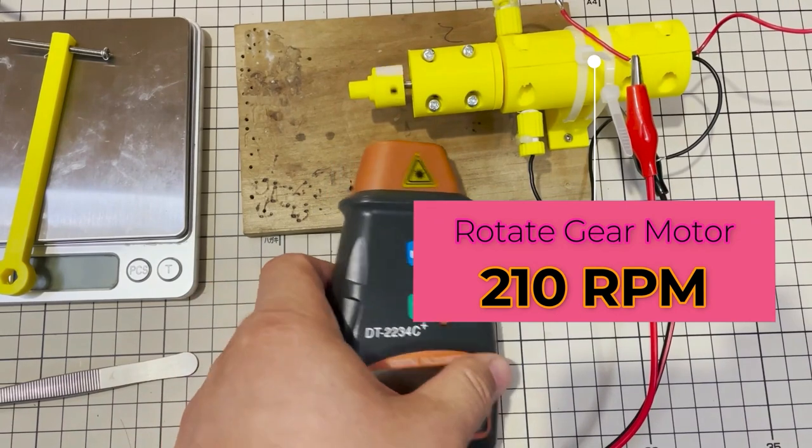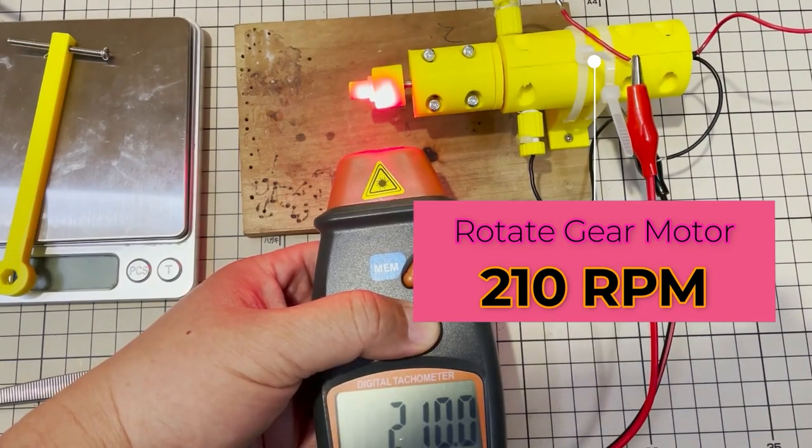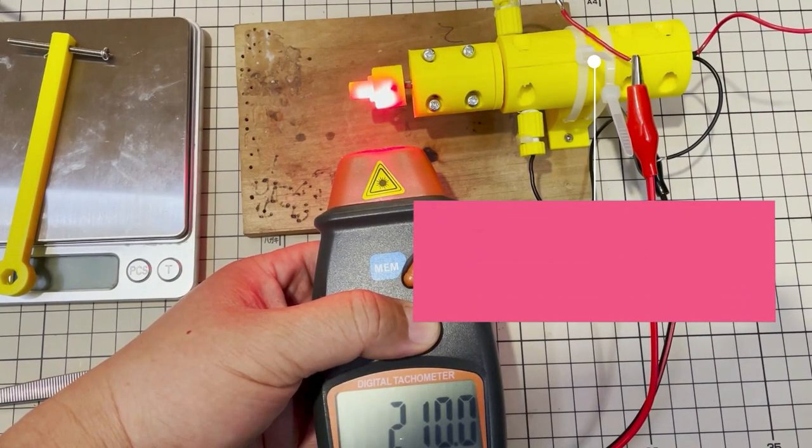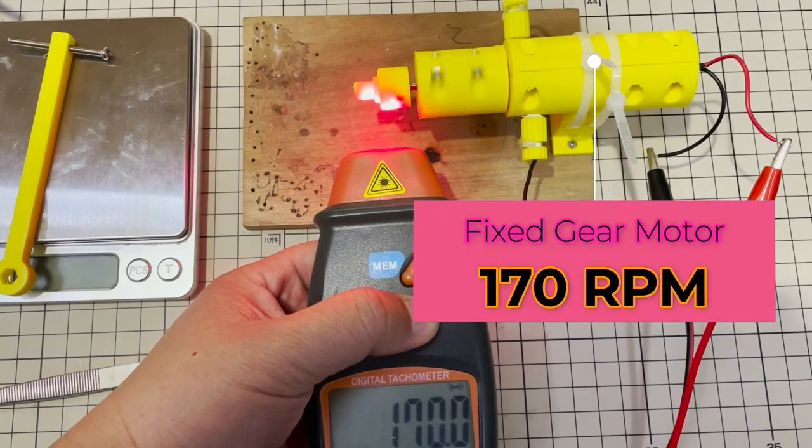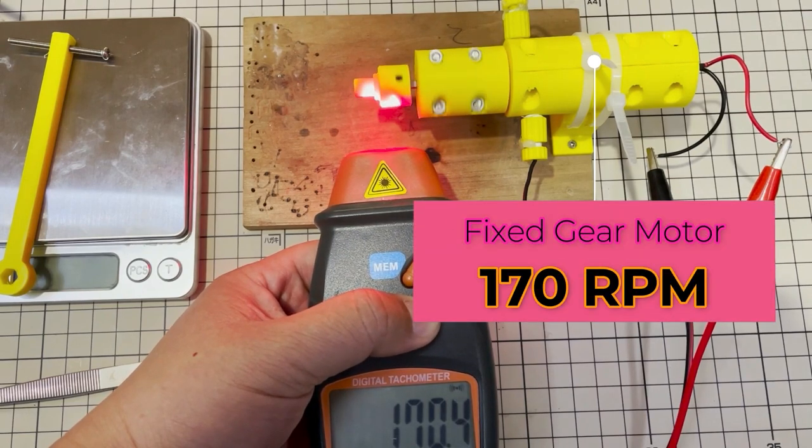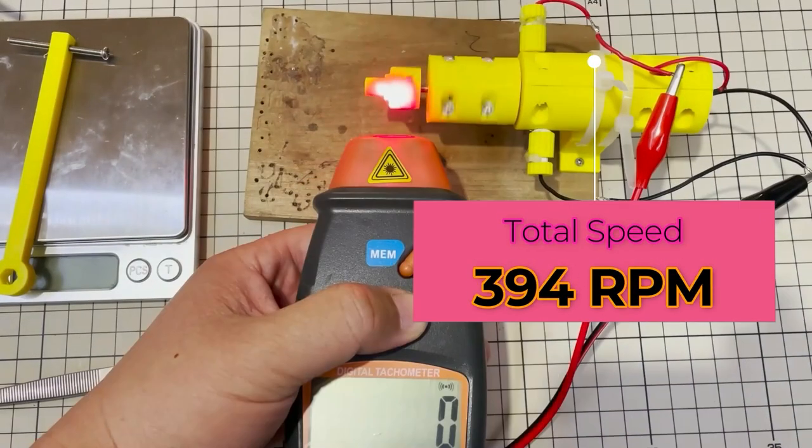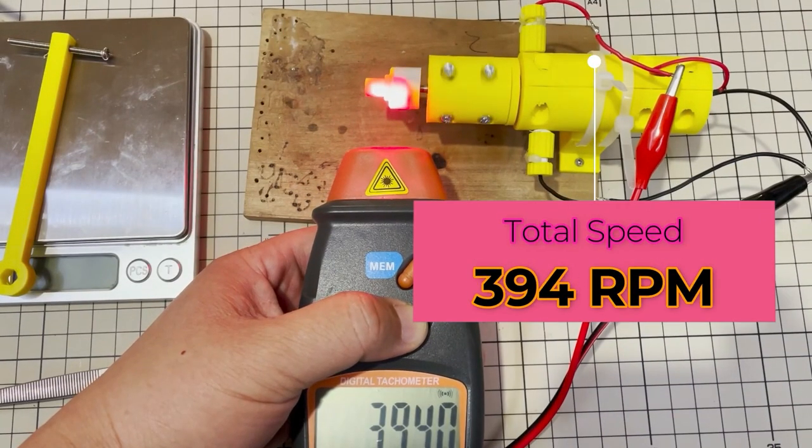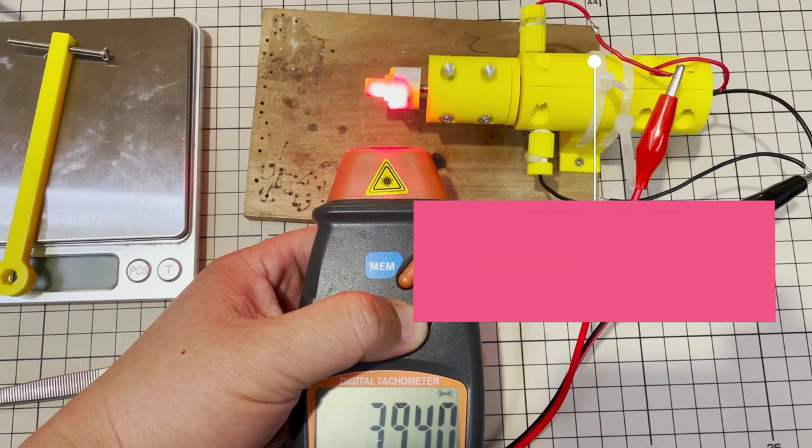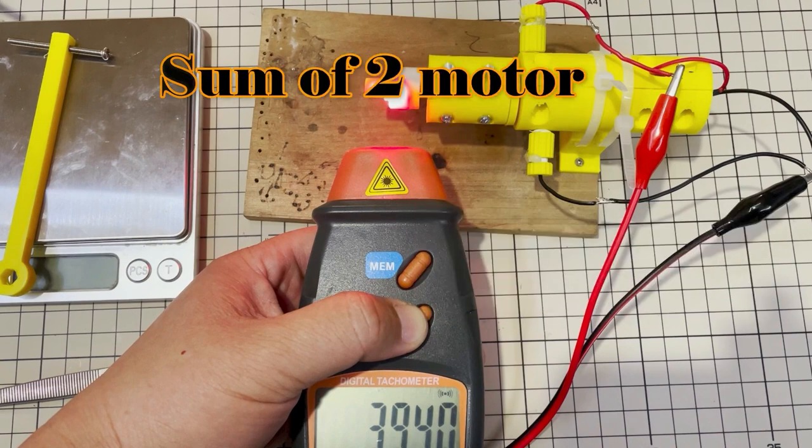The rotated N20 motor has 210 rpm. The fixed N20 motor has 170 rpm. When connecting them together, the total speed is 394 rpm, just equal to the sum of these two N20 motors.